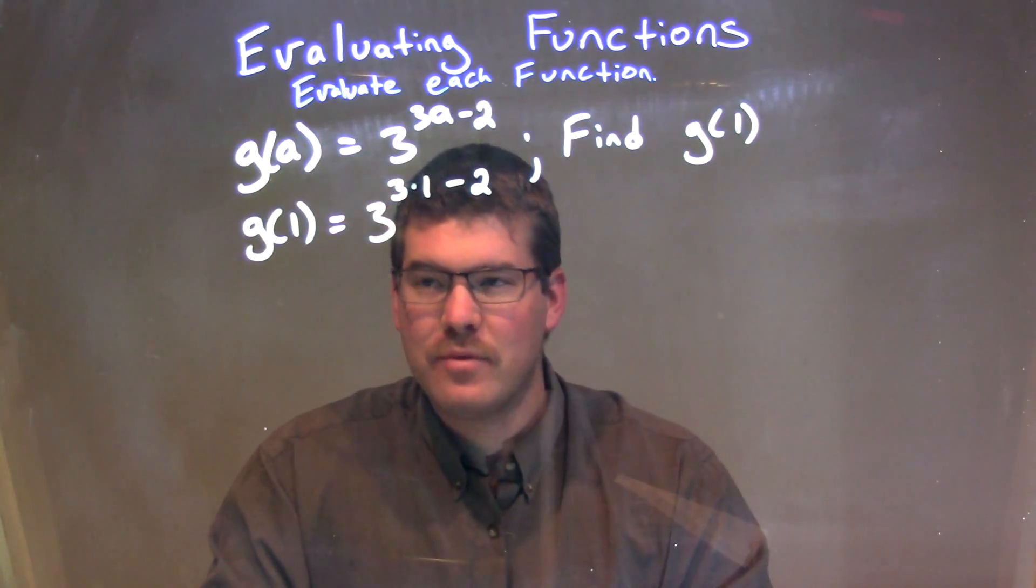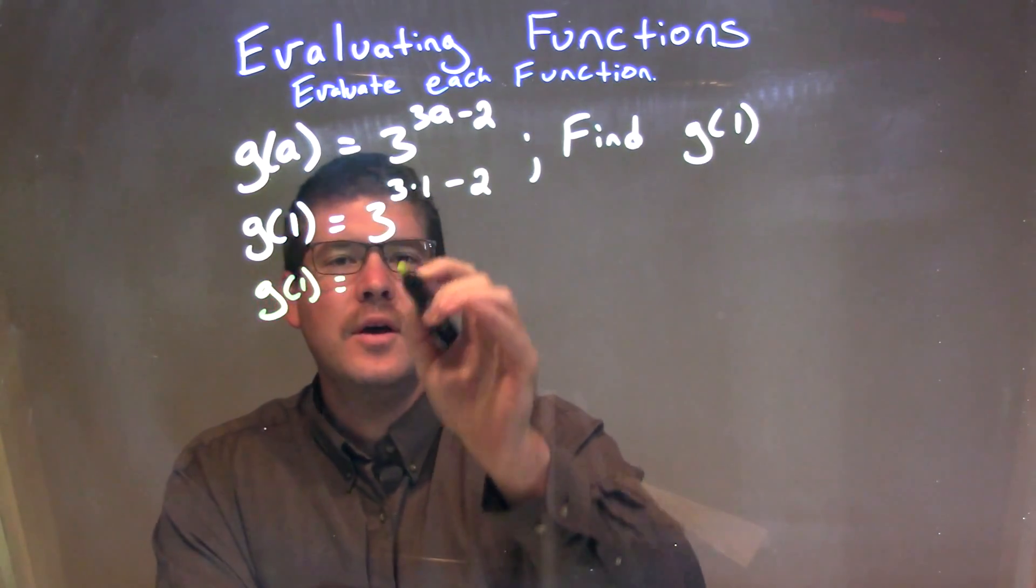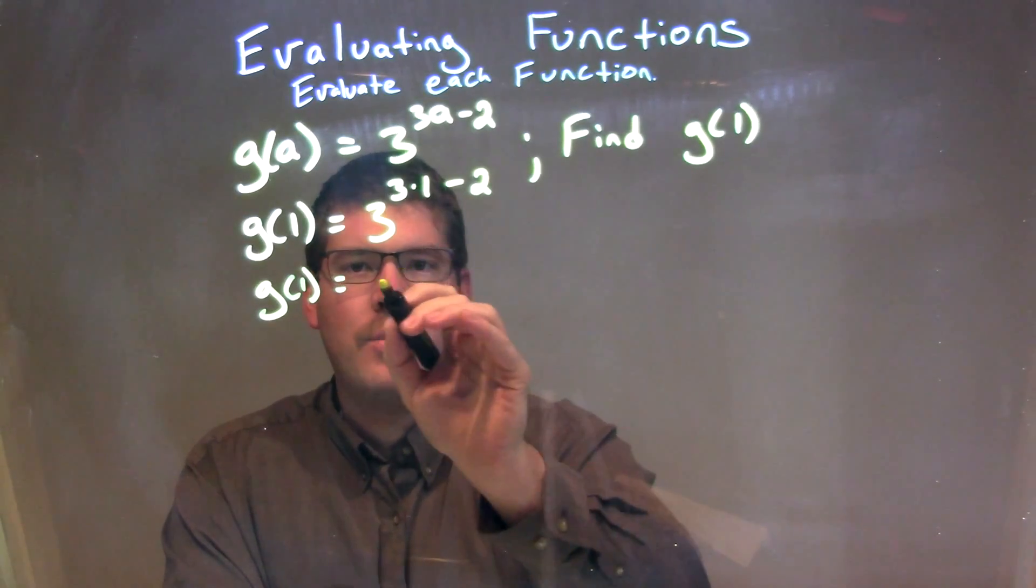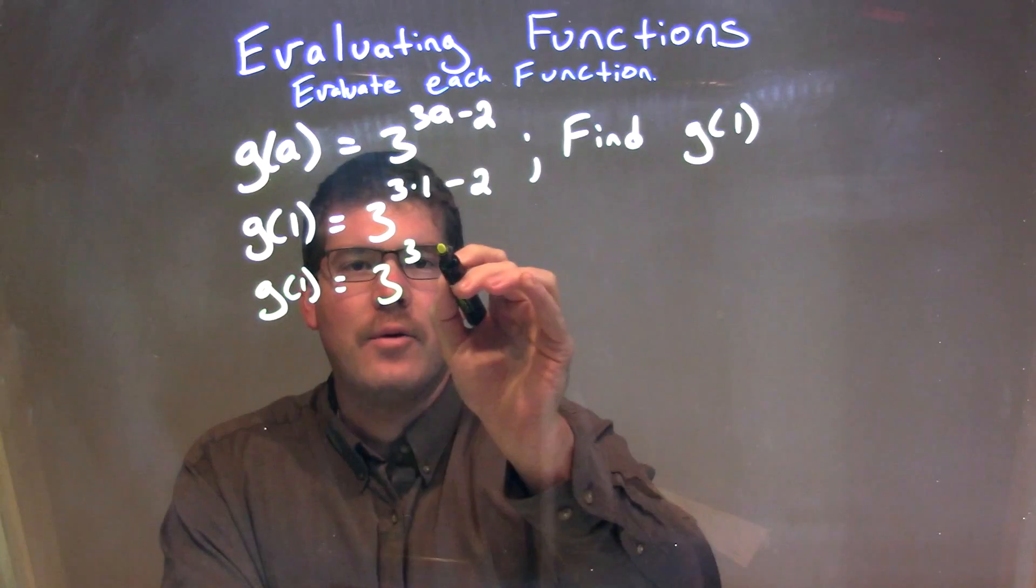Okay, so now let's just simplify. I'm bringing down the g of 1 again, is equal to, well, we simplify the exponent first, everything that's going on up there. So 3 times 1 is just a 3. So we have 3 to the 3rd power minus 2.